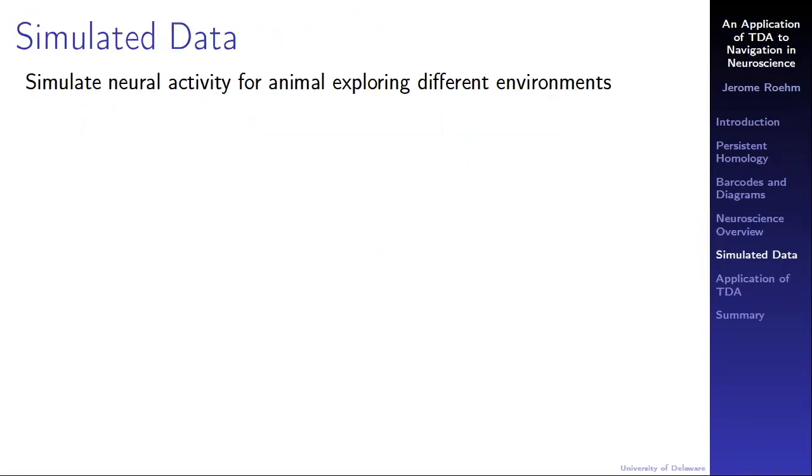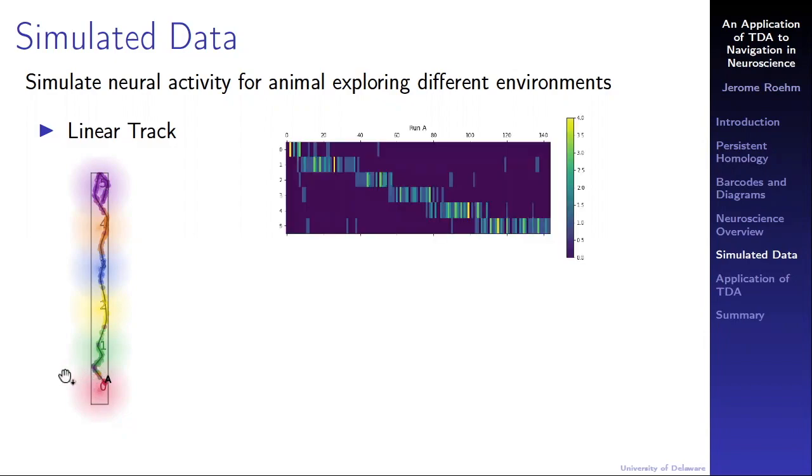In order to investigate this question, I simulated neural activity for the animal exploring different environments. First was a linear track. Pictured here is one run of the animal along the track. The animal starts in place field zero, and then it moves to place fields one, two, three, four, and five. The colored dots pictured are where the place cells fired. As you can see, there are some off-colored dots, which represent noise in the data. Here is a depiction of the firing data. The rows zero through five are the place cells. The columns are broken into tenth of a second bins. This run took about 14 seconds. The colors indicate the number of fires in each bin. The animal starts in place field zero, then moves to place field one and so on, with each neuron firing more frequently when the animal is in the corresponding place field.